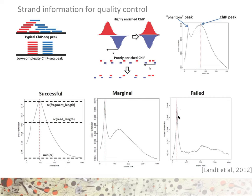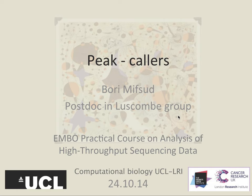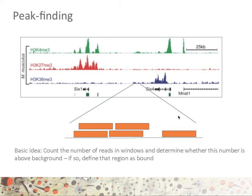Once we have validated the quality of the experiment, the next thing we do is use a peak calling software to identify the regions of interest. The basic idea of peak finding is simply to take a region and count the number of reads in that window, and determine whether this number is above the background noise. If so, the region is then defined as bound.